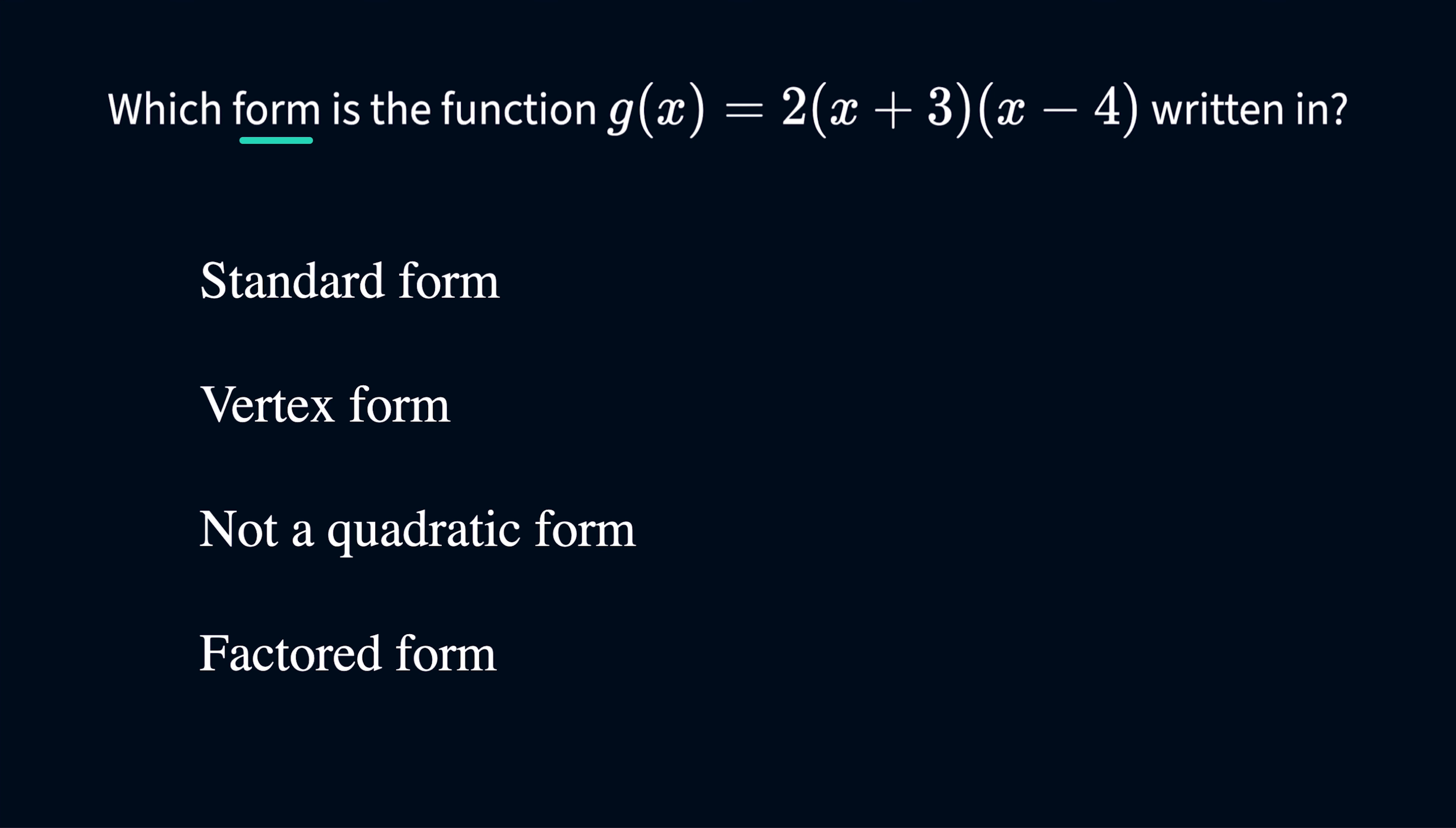Which form is the function g(x) = 2(x + 3)(x - 4) written in?